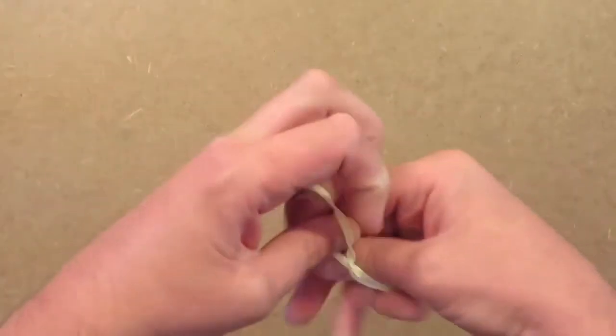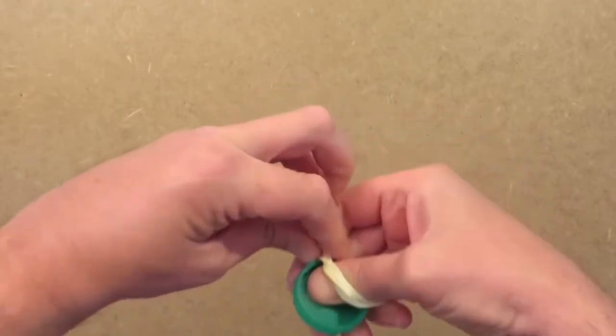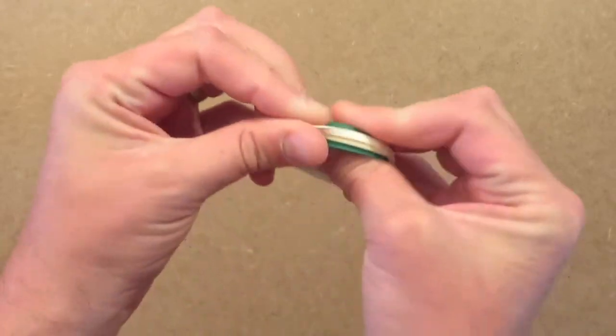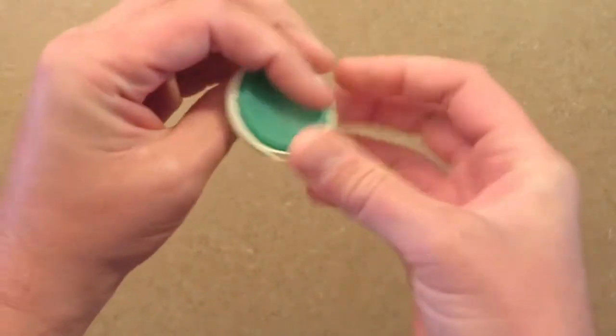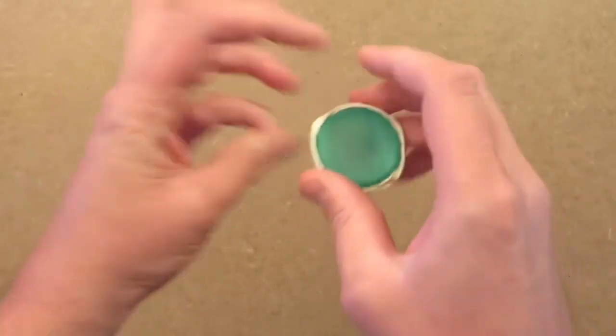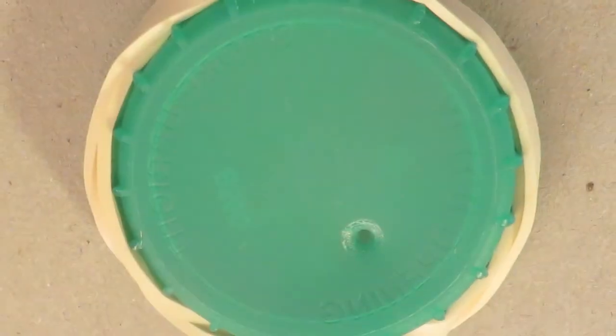Next, you need to wrap an elastic band around the milk top. This needs to be as tight as possible without snapping the elastic band. And there you have your finished spirograph wheel.